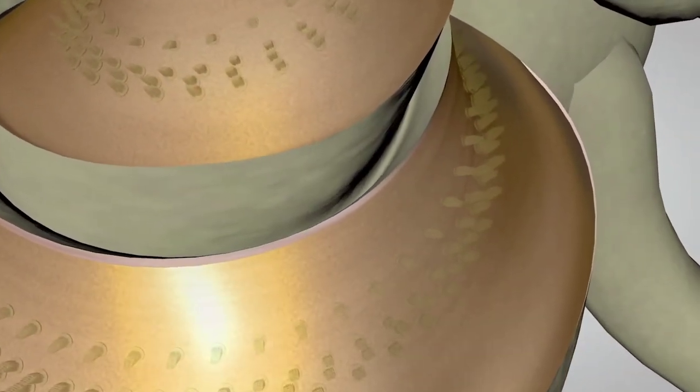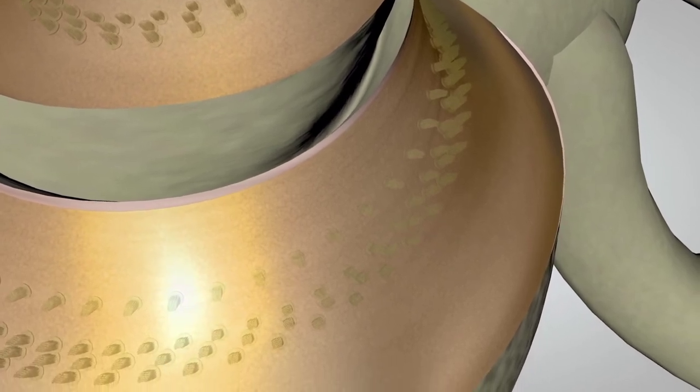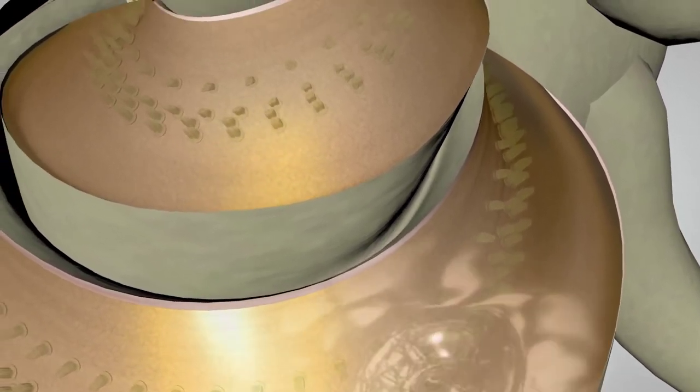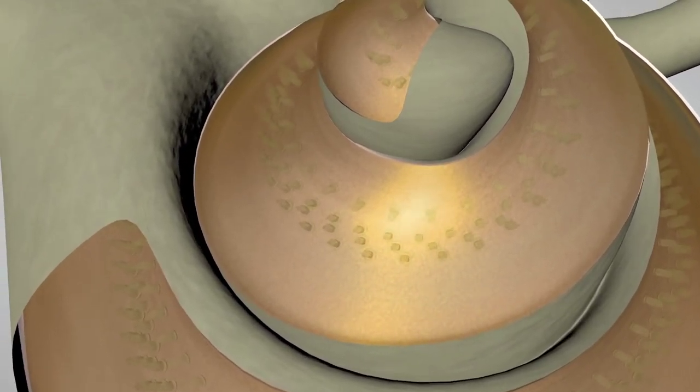The hair cells toward the top of the spiral detect progressively lower-pitched sounds, such as a trumpet or trombone. At the very top or apex of the spiral, the hair cells detect the lowest-pitched sounds, such as a tuba.